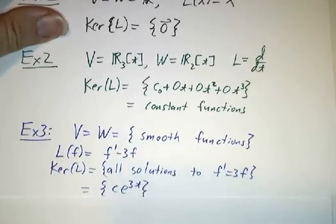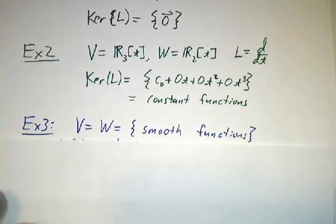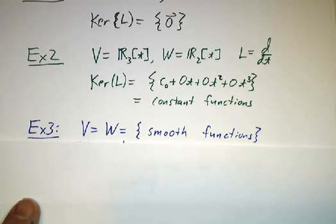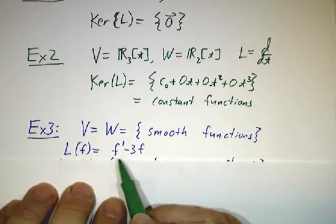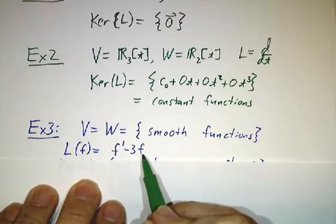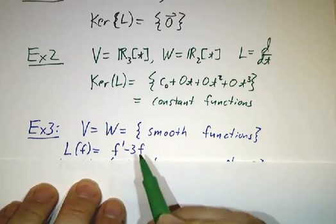And the third example is if we let V and W both be the set of all smooth functions, and L is not the derivative. L of f is gonna be the derivative of f minus 3 times f. It's a linear transformation.